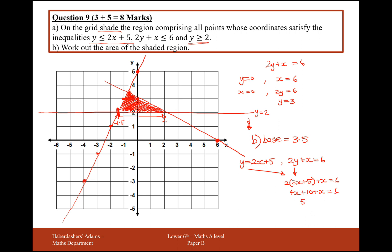So this will be 4x plus 10 plus x equals 6. So this must mean it would be 5x equals minus 4. So the x coordinate here is going to be minus 4 over 5. So therefore, the y coordinate is going to be y equals 2 lots of minus 4 over 5 plus 5. So the y coordinate here is going to be minus 8 over 5. That would be minus 1.6, add 5, so that will make the y coordinate here 3.4.